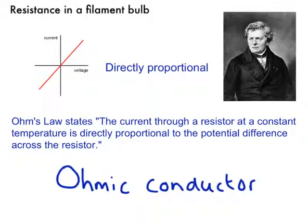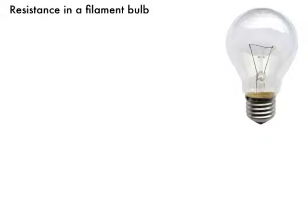But what if we're not looking at ohmic conductors? That's what we're going to think about today, and the first thing we're going to think about is a light bulb. The important bit here when we think about a light bulb is the phrase 'at a constant temperature,' so that's going to be important today. A filament light bulb is one of these more old-fashioned light bulbs that you don't see so much of anymore. It actually works by this piece of wire getting hot and it glows, and that's how the light bulb works. There's the circuit symbol for that, which you might see in an exam paper.